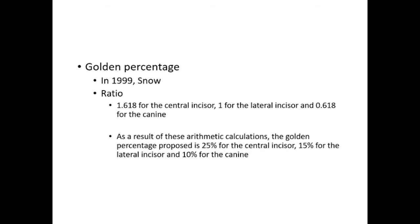In 1999, Snow proposed the golden percentage as a more accurate method for determining and creating symmetry, dominance, and proportion for aesthetically pleasing smiles. Snow used the golden proportion ratio of 1.618 for the central incisor, 1 for the lateral incisor, and 0.618 for the canine. This concept focused on giving the central incisor dominance to achieve an aesthetically pleasing smile.